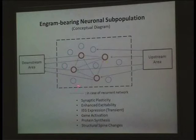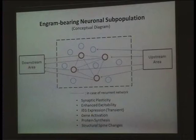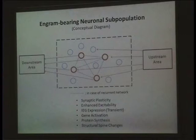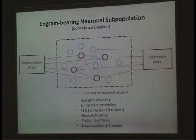When these cells are reactivated by some recall cue, that information is transferred to the downstream area, eventually including the motor system, and you therefore observe what is called behavioral recall. The first person who directly attempted to demonstrate that the engram theory of memory is correct is also from Canada.